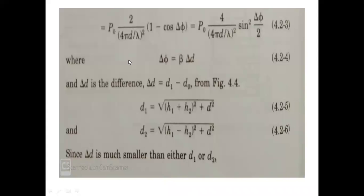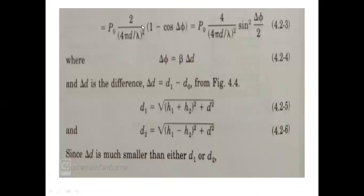Simplifying further: √(2 - 2cos Δφ) = √(2(1 - cos Δφ)). Using the identity 1 - cos Δφ = 2sin²(Δφ/2), this becomes √(4sin²(Δφ/2)) = 2sin(Δφ/2). Substituting back, the received power equation becomes: Pr = P0 · (1/(4π · D/λ))² · 4sin²(Δφ/2).